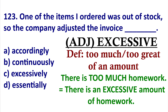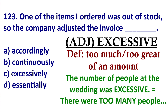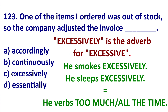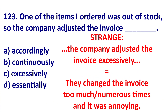Let's start with 'excessively.' 'Excessive' means too much — this is the adjective. For example: there is too much homework in this class, so there is an excessive amount of homework. The amount of people at the wedding was excessive — too many people in your opinion. 'Excessively' is the adverb: he smokes excessively, he sleeps excessively — meaning all the time or too much.